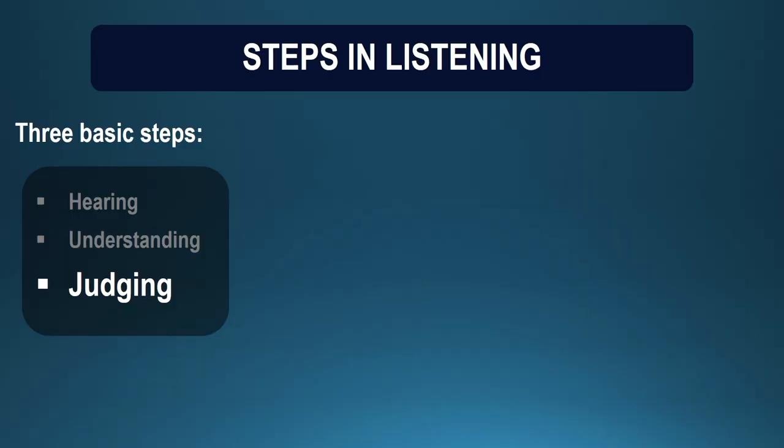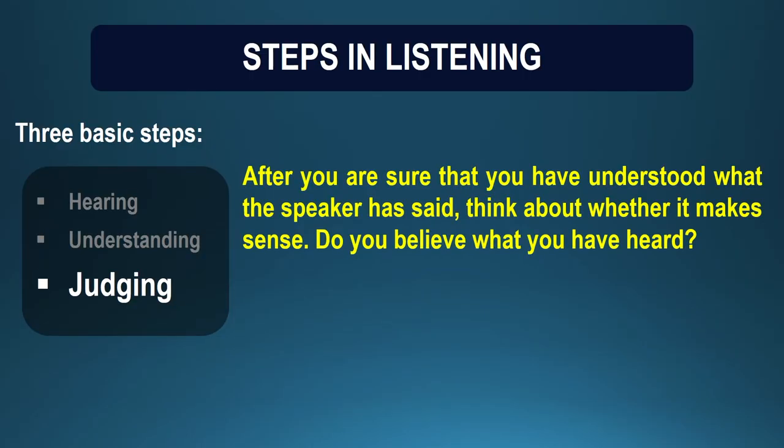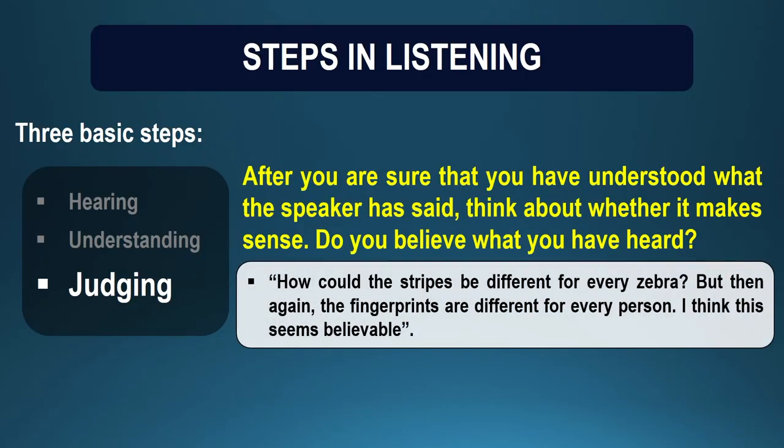The third basic step is judging. When you're sure you understood what the speaker said and have given a meaning to it, you put two and two together and start asking questions. When you start asking questions, the process of judging begins. So how can two zebras be different? How can the stripes of two zebras be so different?